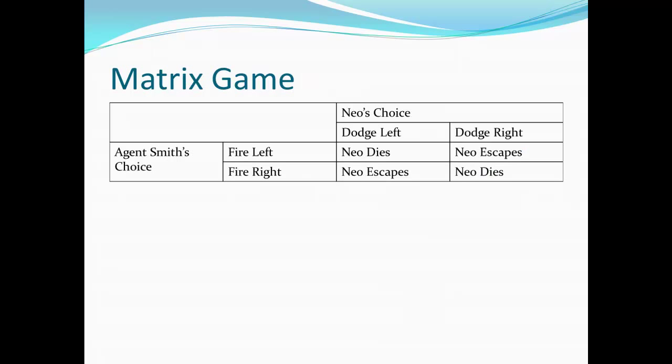Here's a similar game I like to call the Matrix game. We have Agent Smith and Neo. Agent Smith firing a gun at Neo would like to kill him, so Neo dying is a positive outcome for Agent Smith and a negative outcome for Neo. This is exactly like matching pennies: Agent Smith is always trying to fire in the same direction as they believe Neo is going to dodge, while Neo tries to dodge away from where Agent Smith is firing. Just like matching pennies, there will be no Nash equilibrium in this case.